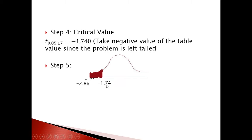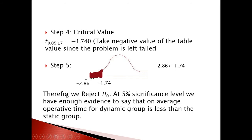Step 5: The critical value is −1.74 and the calculated test statistic is −2.86. Since −2.86 is less than −1.74, it falls in the rejection region. We reject H₀ at the 5% significance level — there is enough evidence to conclude that on average, operative time for the dynamic group is less than for the static group.